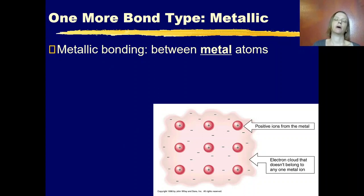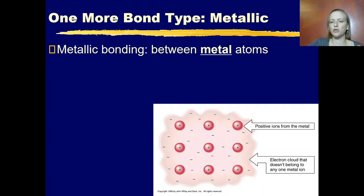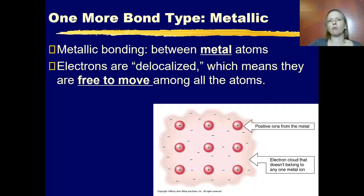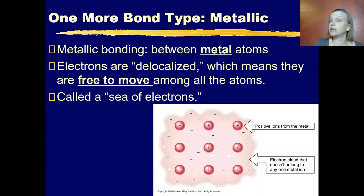There is one more type of bonding we haven't discussed — metallic bonding. We talked about metal joining with nonmetal, and two nonmetals joining together, but not two metals joining together. Metallic bonding happens between metal atoms. In metallic bonding, you have delocalized electrons that are free to move among all the atoms. Chemists often refer to this as a sea of electrons. This sea of electrons gives metals many of their properties, like the ability to conduct electricity.